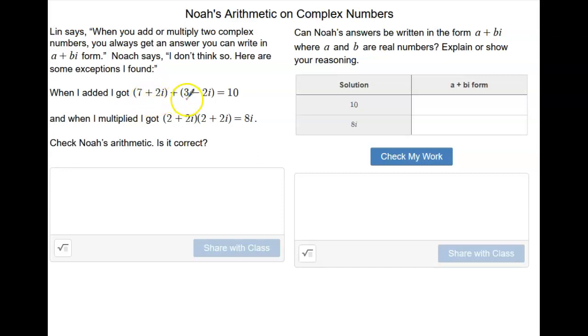So we have 7 plus 2i and 3 minus 2i. Well, we would have 7 plus 3, which is in fact 10. And then we have a positive 2i and a negative 2i, which would be 0i. So 10 plus 0i, 0 times anything is always 0. So that would really be 10.